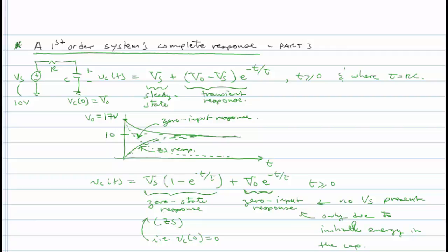One of the usefulnesses of splitting it up as a zero state and a zero input response is, suppose that you were given the zero state response. So you're told, the initial condition is zero, and here's what the total, the complete response is.